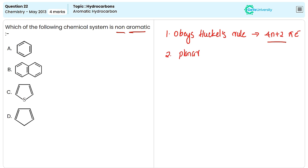And the second rule is the molecule should be planar in nature. This molecule must be planar allowing for the effective overlapping of pi orbitals across the ring.